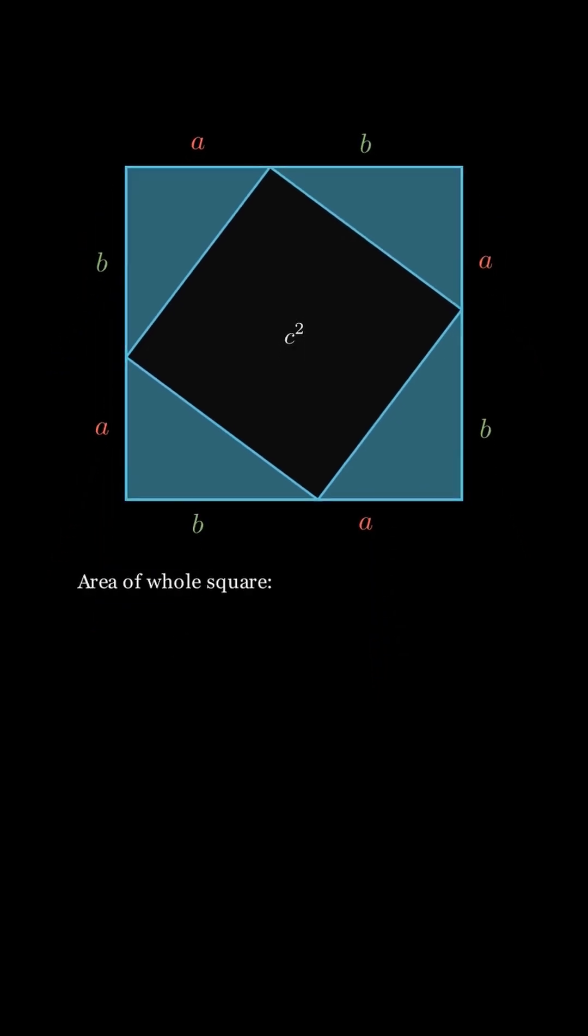The area of the big square is a plus b whole squared. The area of the inner square is c squared, because it has sides c. And the area of the four triangles is 4 times 1 half ab, which equals 2ab.